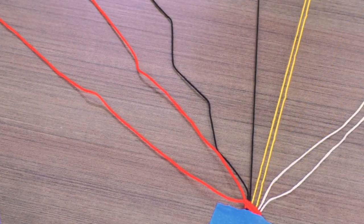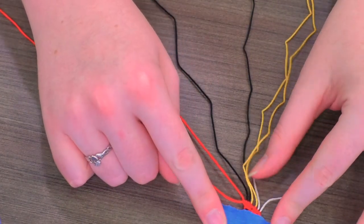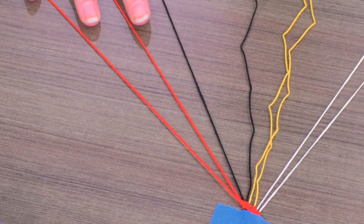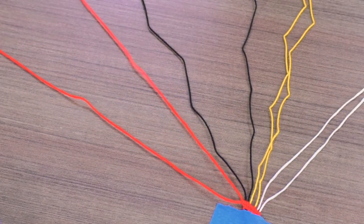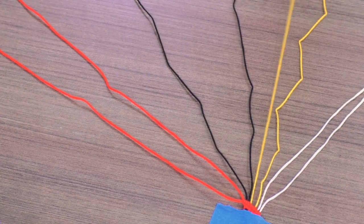So once you have all your threads tied in a knot, I suggest taping it down onto a table or clipping it onto a clipboard. This holds it steady while you do the pattern down the strings. You want to keep your strings nice and separate and spread out so that you go in the correct order.